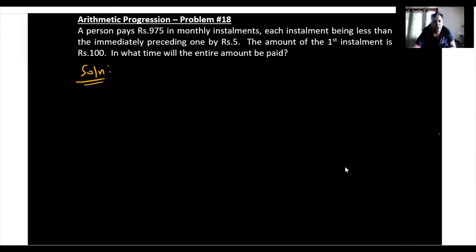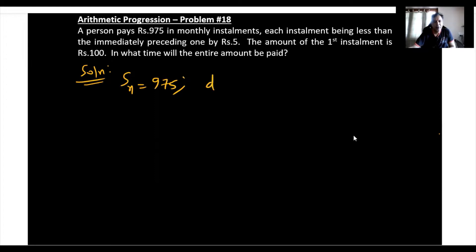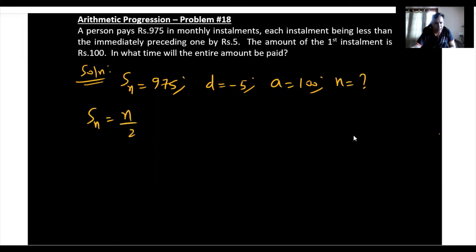The total sum is 975. Every installment is less than the preceding one, so the common difference is minus 5. The first installment, a, is 100. We need to find n. We use the formula for Sn, which is n by 2 times 2a plus n minus 1 times d.